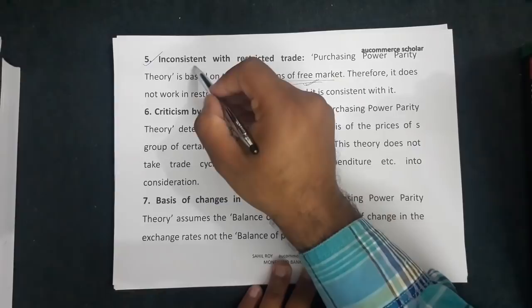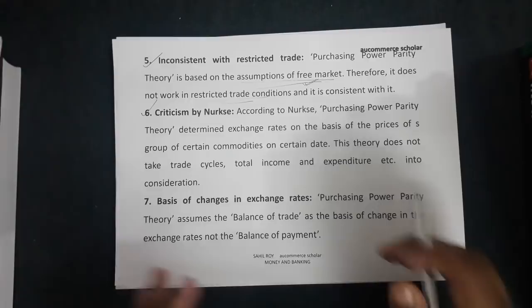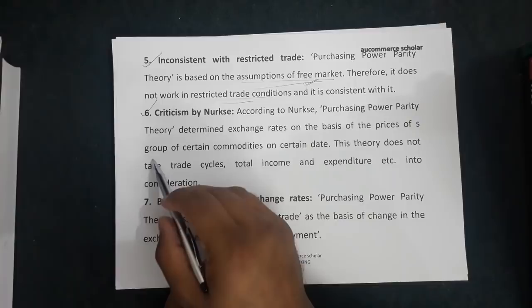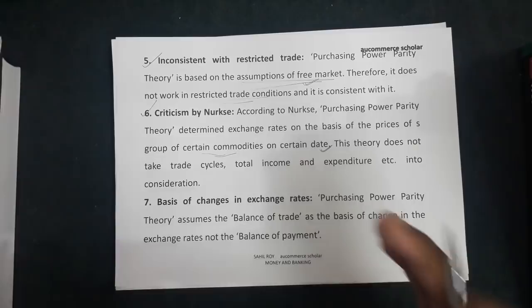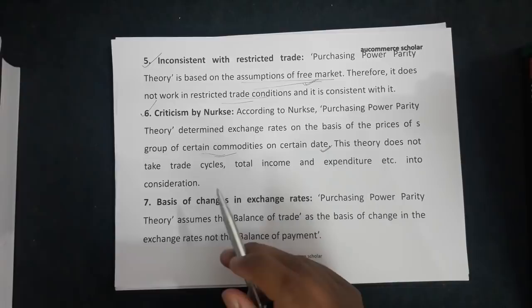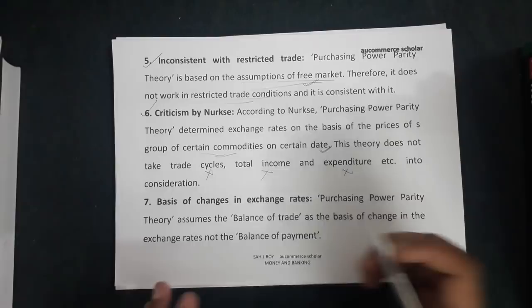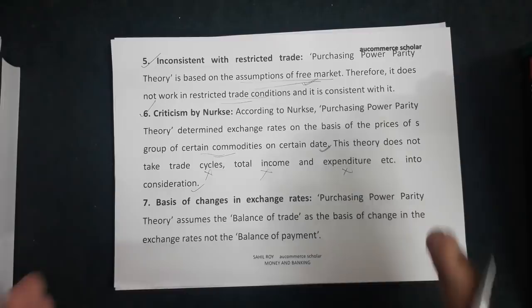The sixth criticism is by Nercse. Nercse criticized that purchasing power parity theory determines exchange rate on the basis of prices of a group of certain commodities on a certain date. This theory does not take the trade cycle, total income, or total expenditure into consideration — and this is the biggest drawback of the purchasing power parity theory.